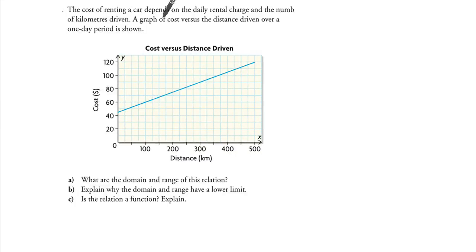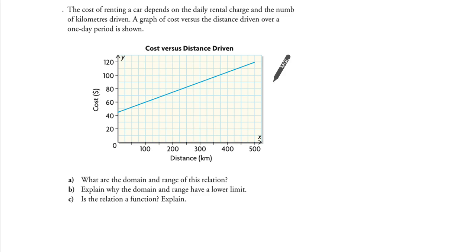The cost of renting a car depends on a daily rental charge and a number of kilometers driven. This is the graph of the cost versus distance driven over a one-day period.